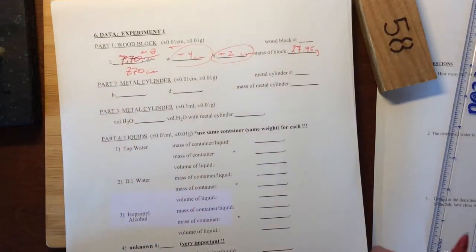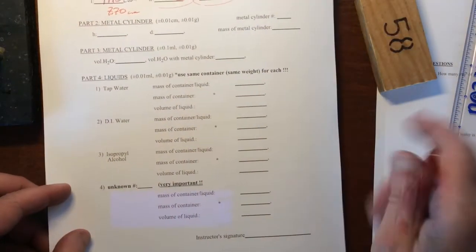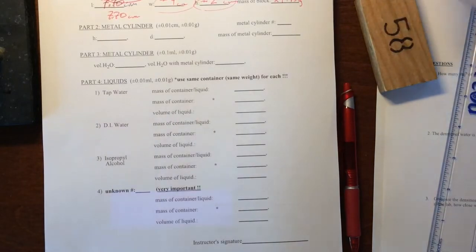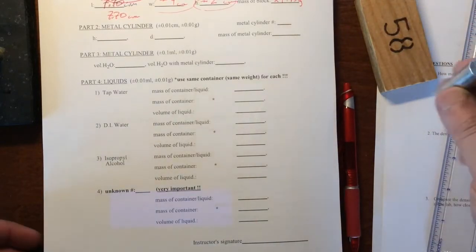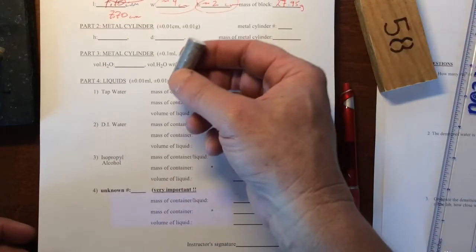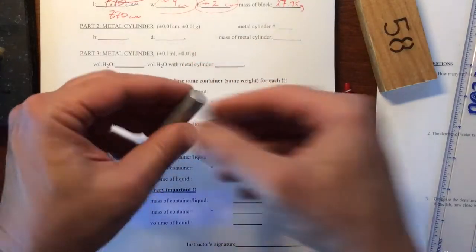Now we don't want to do any calculations yet, because we're still in lab. So now we have to go on to part 2. With part 2, we're going to do the same thing, only now we're using a metal cylinder here. Shiny metal cylinder. So we need the height.